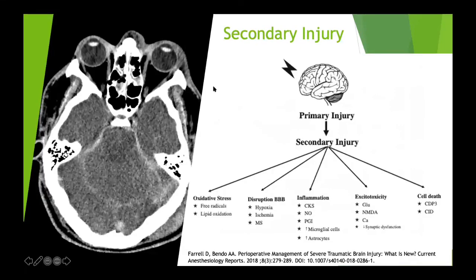The mechanisms driving secondary injury include not only oxidative stress but disruption of the blood-brain barrier, ongoing inflammatory cascades and processes, and excitotoxicity that leads to even more cell death - it's a complete lecture topic on its own.